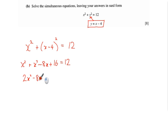2x squared minus 8x, bring the 12 across, plus 4 equals 0. Because it's an equation and these are all divisible by 2, the right-hand side included, we can do that. So it's x squared minus 4x plus 2 equals 0.